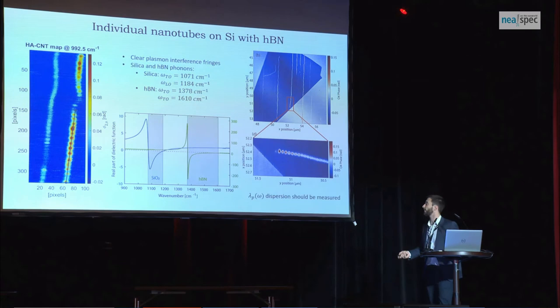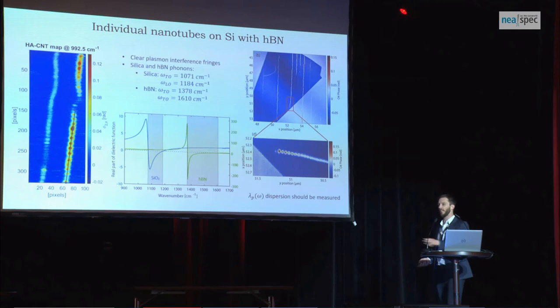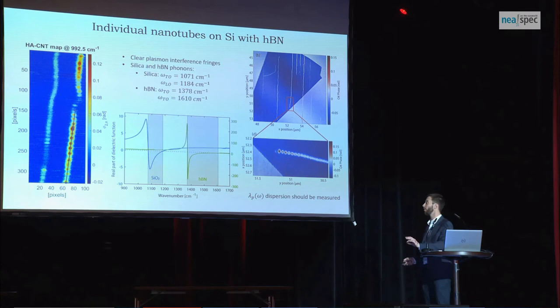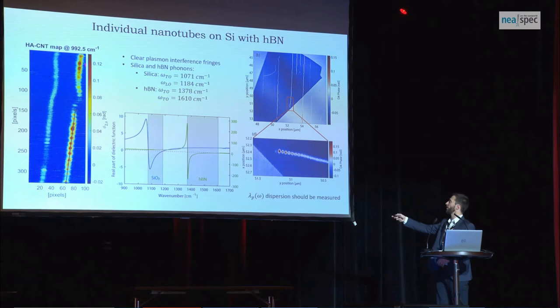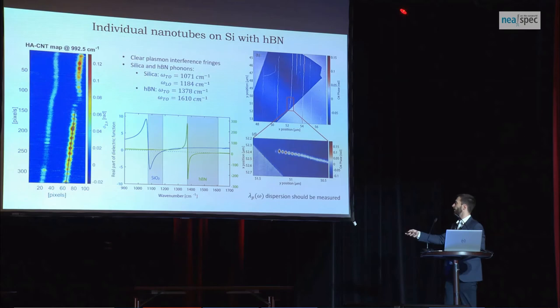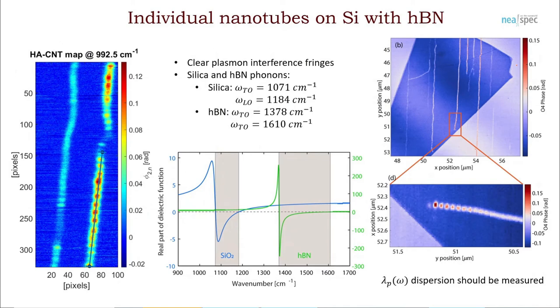We wanted to study the interaction of the plasmons and the substrate phonons. We made a sample — undoped silicon with a native silica layer on top, which is very thin at 2 nanometers — and we also exfoliated hexagonal boron nitride flakes and transferred the nanotubes onto them. We can very nicely see the plasmon interference patterns. The silica and the hBN have two separate reststrahlen bands where the phonon polaritons can be excited, and by measuring through the whole spectral range and retrieving the plasmon dispersion or hybrid mode dispersion, we can assess the coupling.